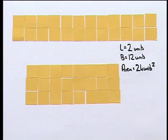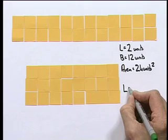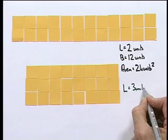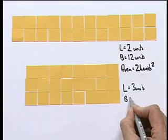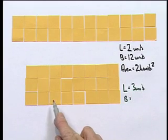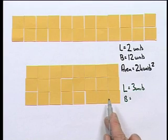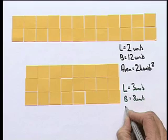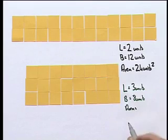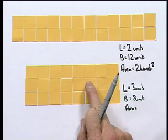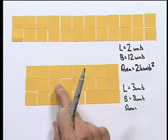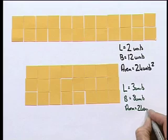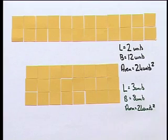Now let's repeat that for the other rectangle. The other rectangle has a length of 3 units, a breadth of 8 units, and an area of 24 units squared.